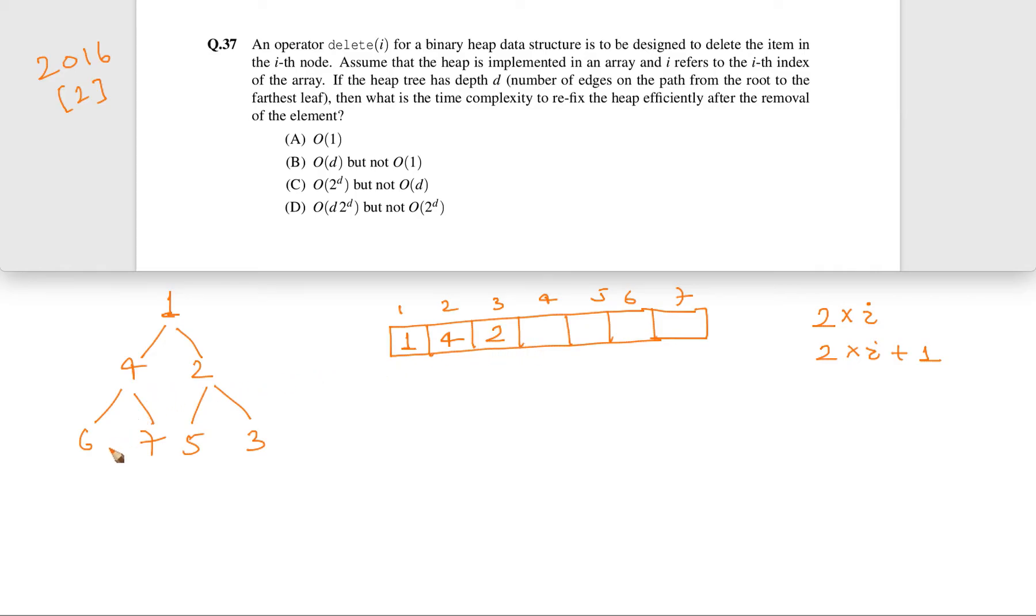In the same fashion, 6 will be placed at index 2 times 2, which is 4, and 7 at 5. So 6 will be here, 7 will be here. Similarly, 5 will be here, 3 will be here. So this is the way we store. So now our heap is stored in array.